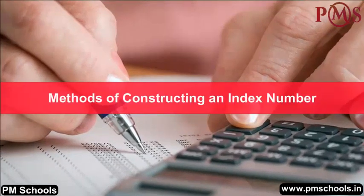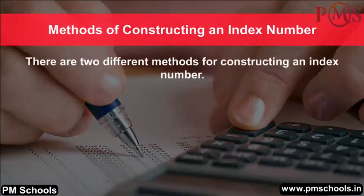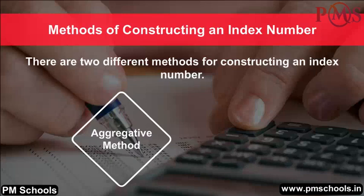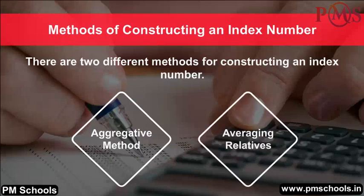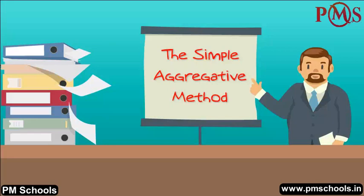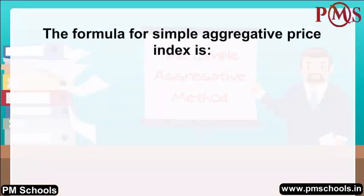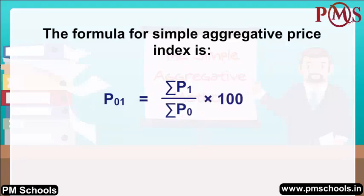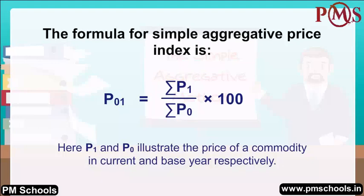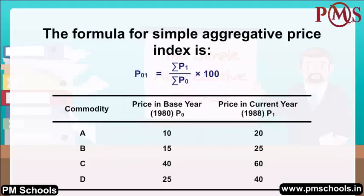Methods of Constructing an Index Number. There are two different methods: the aggregative method and the method of averaging relatives. The simple aggregative method uses the formula P01 = (ΣP1 / ΣP0) × 100, where P1 and P0 represent the price of a commodity in the current and base year respectively.